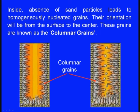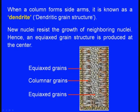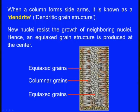Columnar grains look like columns. When a column forms side arms, it is known as a dendrite — as the column advances toward the center of the casting it develops side arms. New nuclei resist the growth of neighboring nuclei. Columnar grains advance from both sides and interfere with each other. Finally, at the center, equiaxed grains form again.